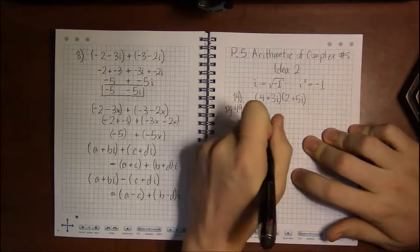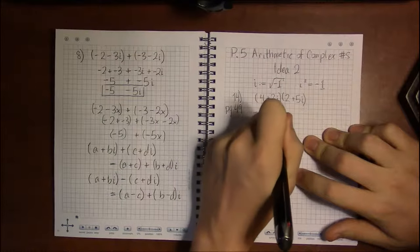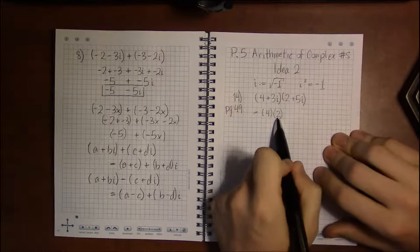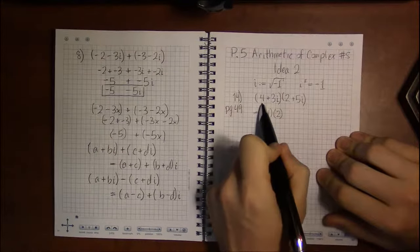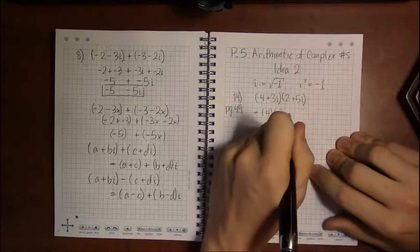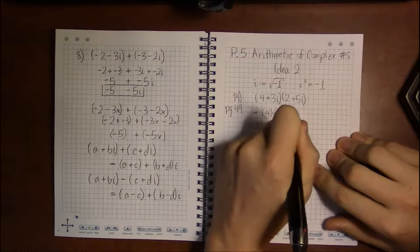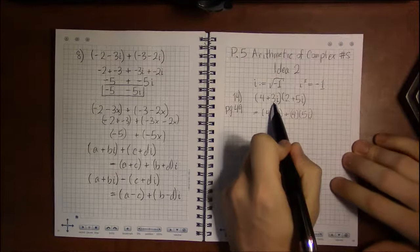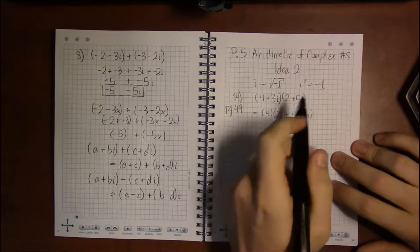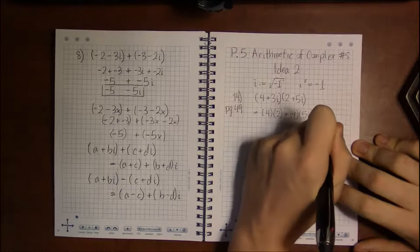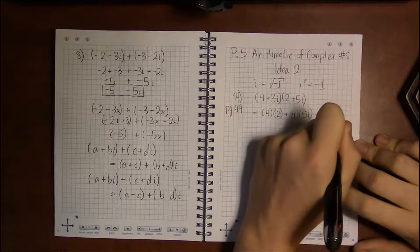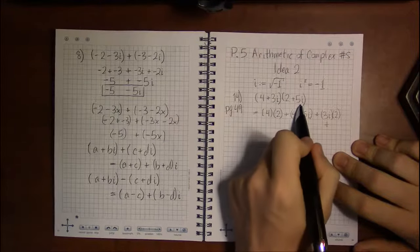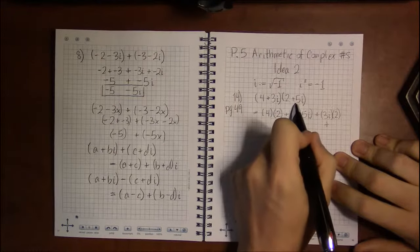I do 4 times 2, so I'm going to write this out slow. I'm not going to write down 8, I'm just going to write down 4 times 2, take it real slow the first time around. 4 times 5i, so plus 4 times 5i. Then, the inner, 3i times 2, and then finally, 3i times 5i. I multiplied everything in here, with everything in here.